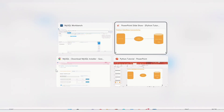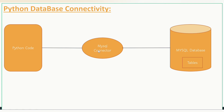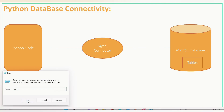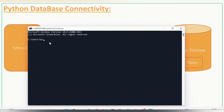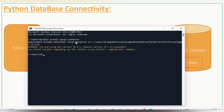Now we need to install the MySQL connector. Open Command Prompt by pressing Windows + R, typing cmd, and clicking OK. Then type: pip3 install mysql-connector and press Enter. I have already installed it, so it says 'Requirement already satisfied.' If you haven't installed it, it will take some time and then install the MySQL connector.